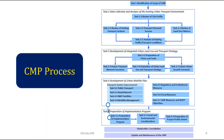The CMP process involves several steps. The first is identification of scope. The second is data collection and analysis of the existing urban transport environment, which includes reviewing the city profile, reviewing the existing transport system, conducting transport demand surveys, reviewing land use patterns, and analyzing existing traffic and transport conditions.